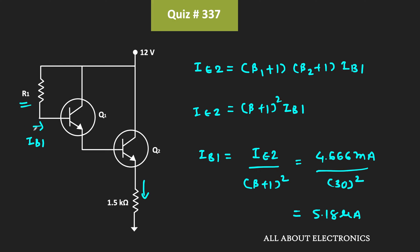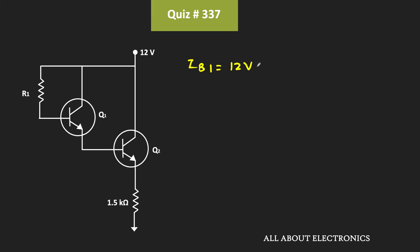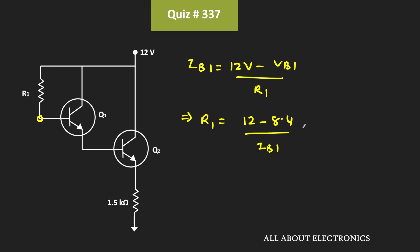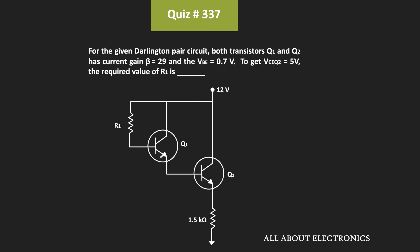IB1 = (12V - VB1) / R1, where VB1 is the voltage at this node. Therefore R1 = (12V - 8.4V) / IB1 = 3.6V / 5.18μA = 694.3kΩ. Whenever R1 = 694.3kΩ, the voltage Vceq2 = 5V. So for this question, the required value of R1 is 694.3kΩ.